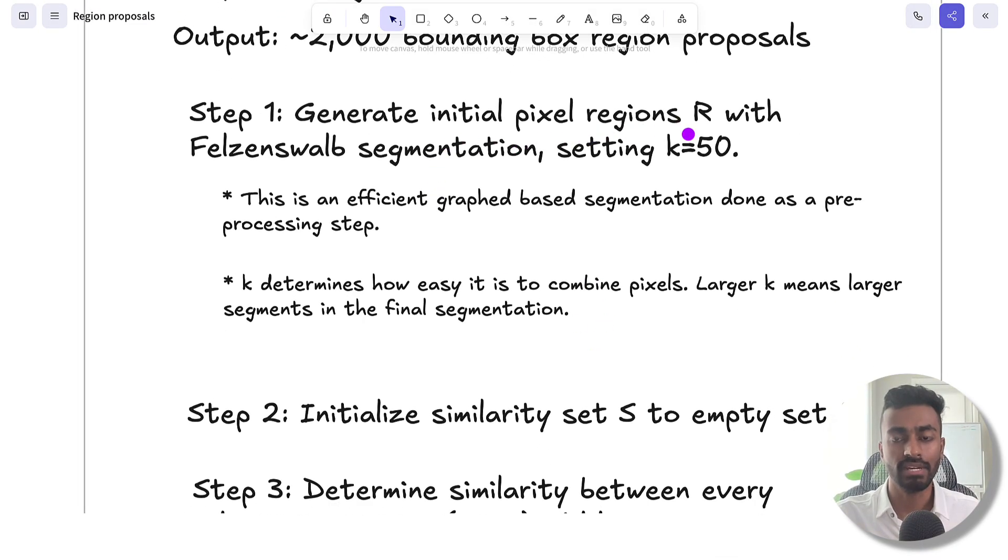We generate initial pixel regions, R, with the FelsenSwab segmentation, setting K to 50. So FelsenSwab segmentation is a graph-based segmentation that is done as a pre-processing step to object detection, typically. And this K will determine how easy it is to combine regions of these segments together.